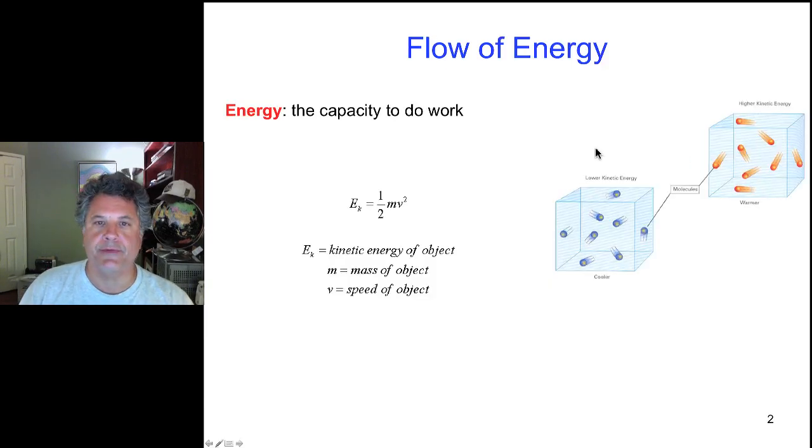So let's define energy first of all. It is the capacity to do work, and there are formulas that describe that in terms of the kinetic energy of things and the mass of objects and the speed of objects. So kinetic energy is a special type of energy that has to do with motion, and the warmer things are, the more kinetic energy the atoms and molecules in that system have.